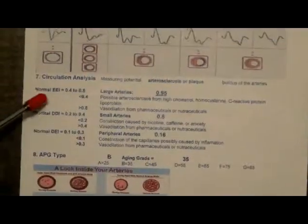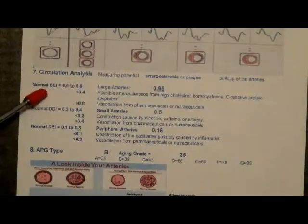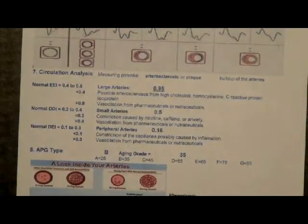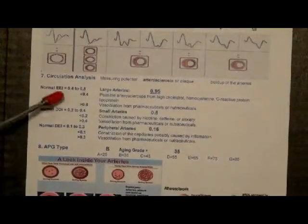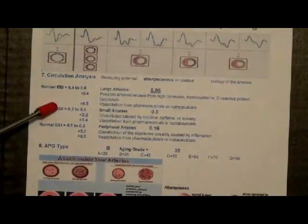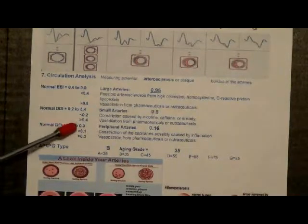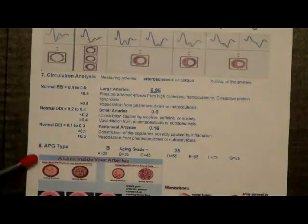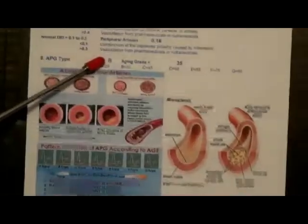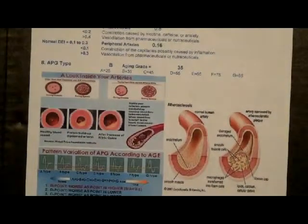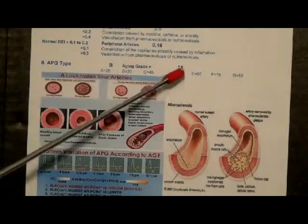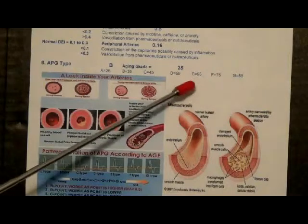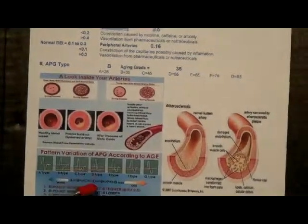We're looking at circulation analysis here. We're looking at the EEI, which we saw over on the circulation analysis report as the first one. Then we're looking at the DDI, which is the middle arteries, and then the capillaries, which is the DEI, with an explanation of each of those. Here's where we identify the type — in this case we're type B, or type DB. By using that, we can do calculation in the calc spreadsheet and determine the biological age — so this is how we come up with the calculated biological age.